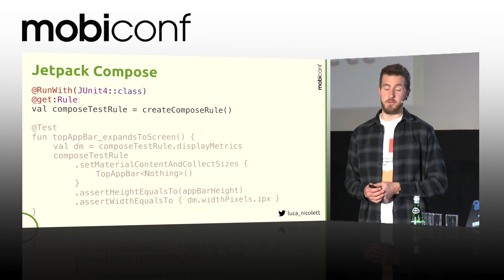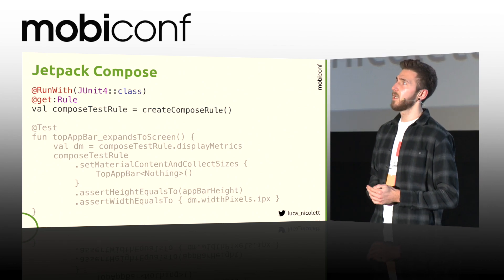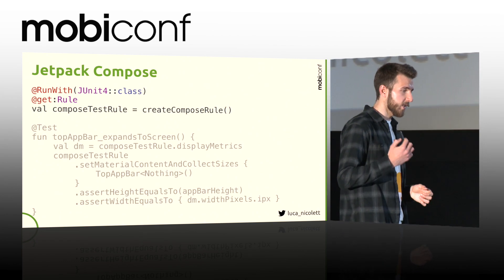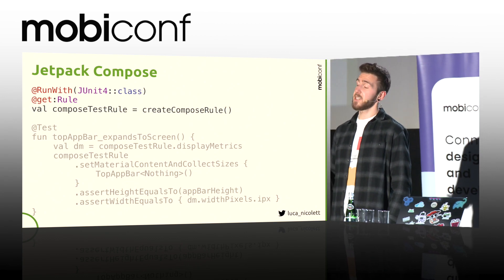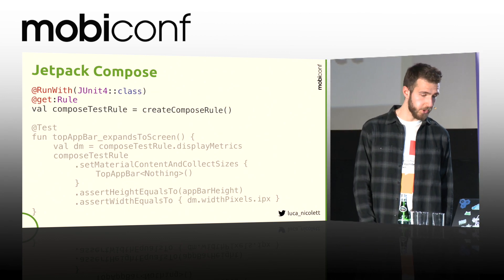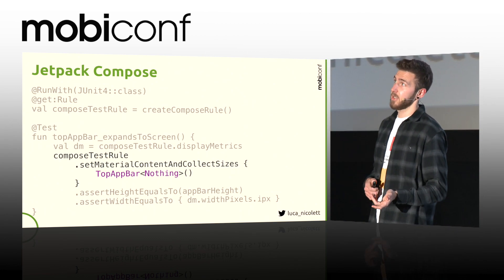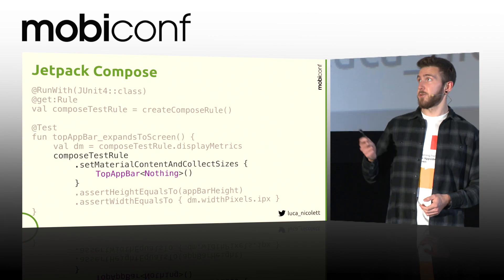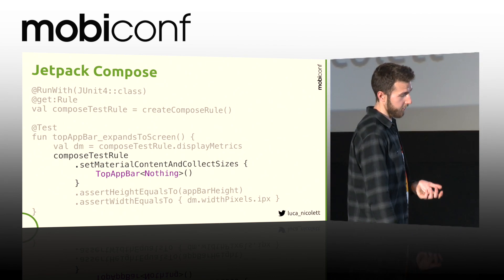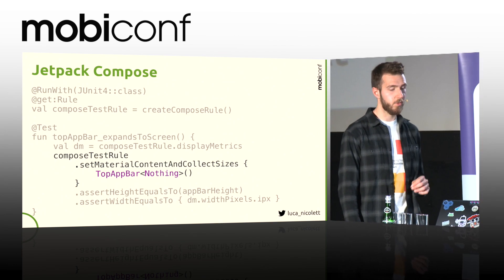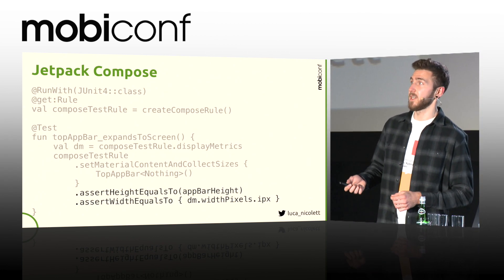Another big concern around the community is related to testing. They say that Jetpack Compose should be unbundled from the OS, but it's not for testing. Every single test in the repository is run with JUnit4, and they are using test rules to test composable functions. Since composable functions don't have any return type, you can't assert anything on them directly. That's why they are using a composable test rule and a function called setMaterialContent and collectSizes, which executes the composable function, collects the sizes of the execution, and returns a size which you can then assert on.